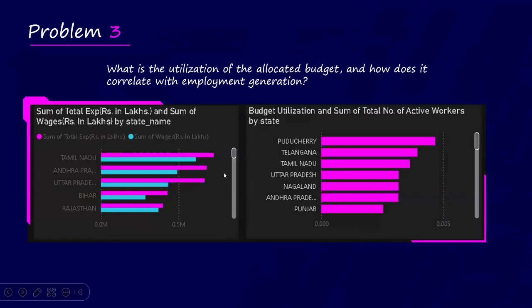Our third problem is: what is the utilization of the allocated budget and how does it correlate with employment generation? For this, I made the clustered bar charts.